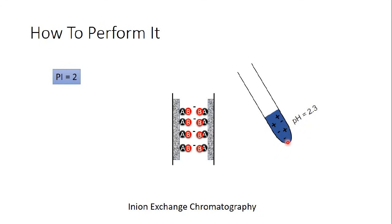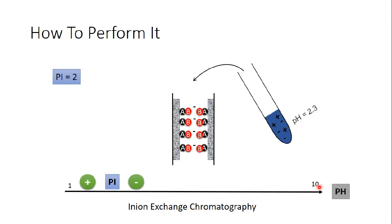Therefore we apply anion exchange chromatography. When we apply the sample to the column, our negatively charged protein will exchange with substance B and bind to the column. Meanwhile, all proteins with a pI higher than 2.3 are positively charged, because the pH of the solution is lower than their pI values — and by the rule of thumb, pH lower than pI means those proteins are positively charged.